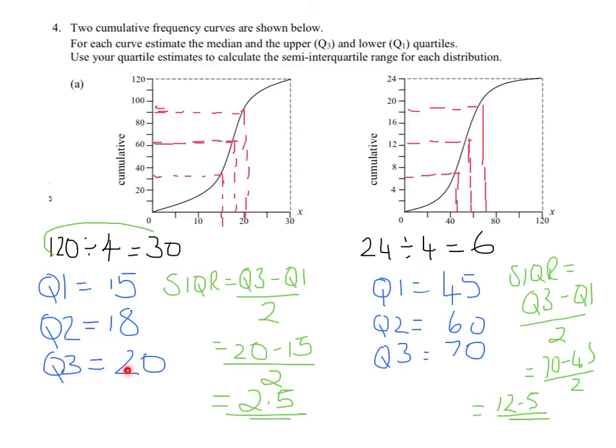That's given us quartile 1, 2, and 3. We've used these values to calculate the semi-interquartile range, which is quartile 3 minus quartile 1, all divided by 2. It's always divided by 2 because it's a semi-interquartile range.